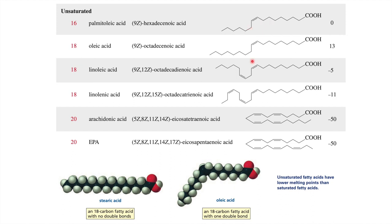In unsaturated fatty acids there is a double bond present in the alkyl chain — it can be one double bond or multiple double bonds. This double bond decreases the melting point of the fatty acid. One double bond decreases the melting point to zero degrees. If you keep one double bond constant and increase the hydrocarbon chain length, the melting point increases to 13°C. If you increase the number of double bonds, the melting point further decreases.